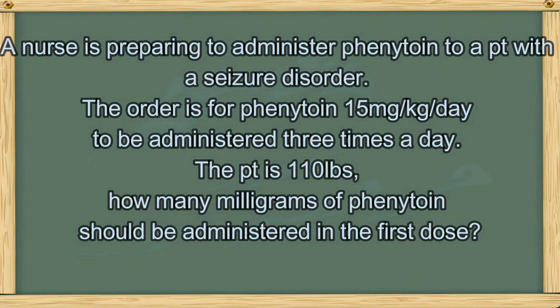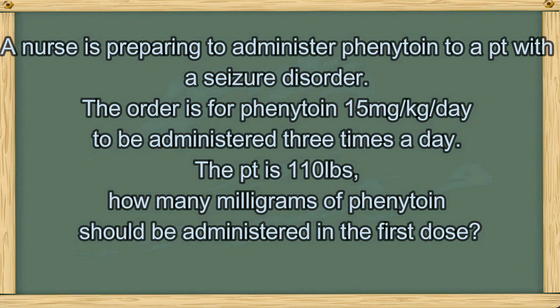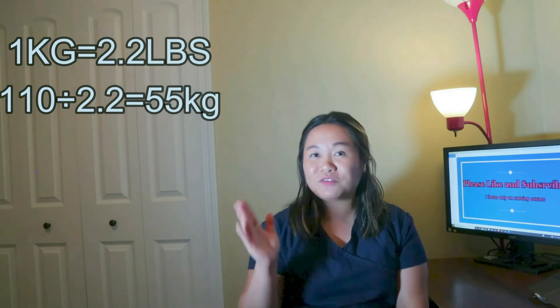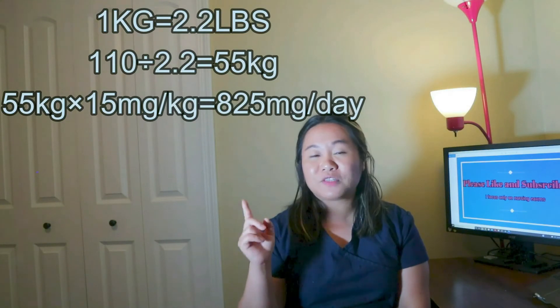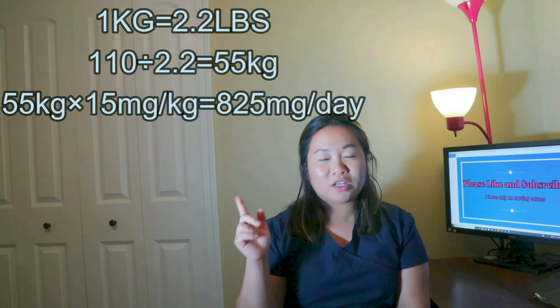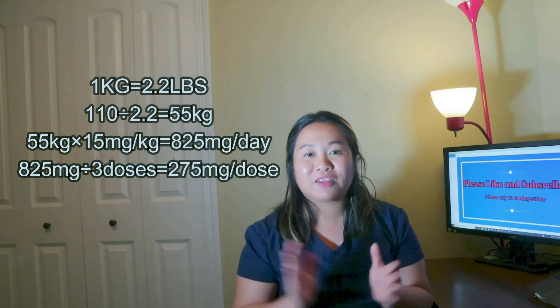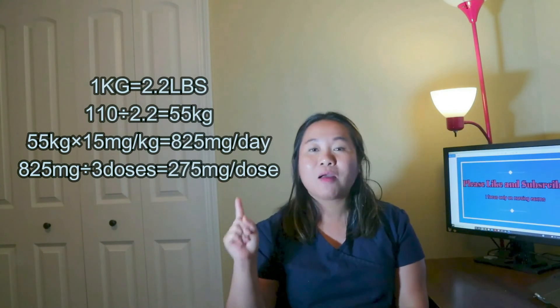Our next question is actually a math question. A lot of you have heard about math questions — your heart beats fast. But don't worry, the more you practice, the better you get. A nurse is preparing to administer Dilantin to a patient with a seizure disorder. The order is for Dilantin 50 mg per kg per day to be administered 3 times a day. The patient weighs 110 pounds. How many mg of Dilantin should be administered in the first dose? 1 kg equals 2.2 pounds, so 110 ÷ 2.2 = 50 kg. 55 kg × 50 mg/kg = 2,750 mg per day. That's the whole day — the question asks for one dose, so 825 mg ÷ 3 = 275 mg per dose.